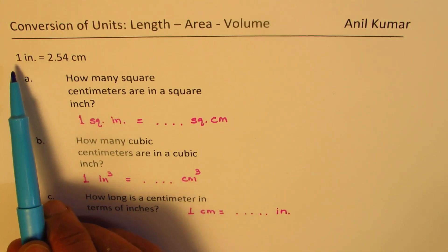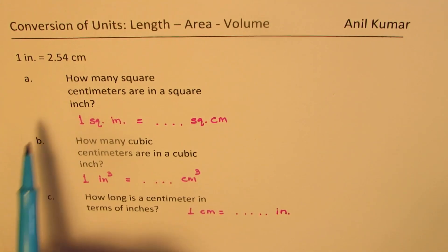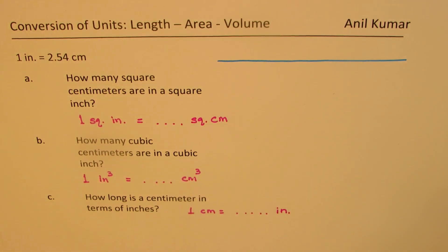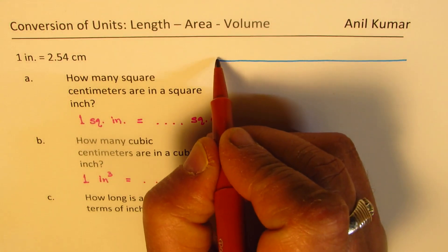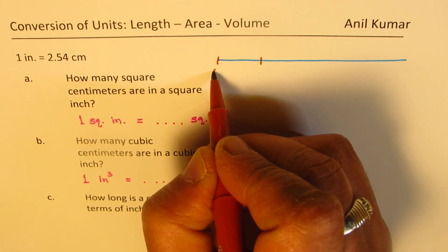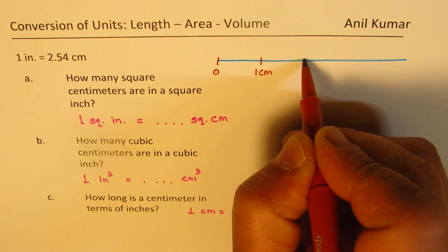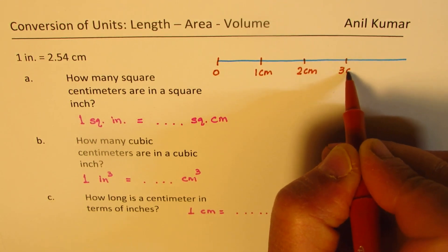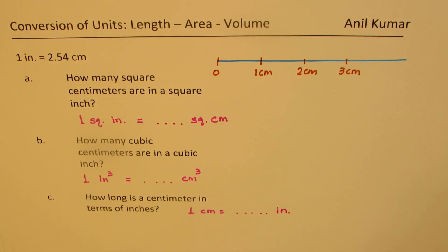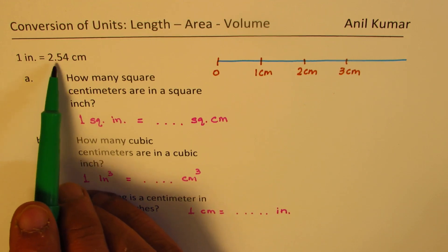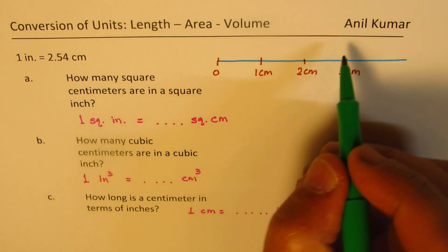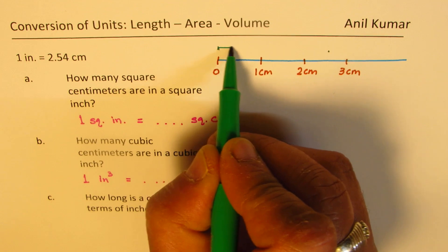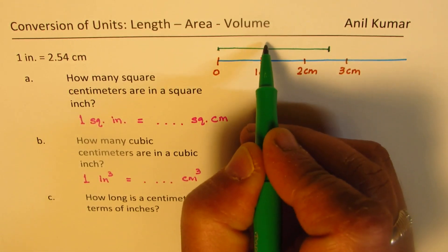Let's understand what is given to us. One inch is 2.54 centimeters. Let's draw a line to represent this — starting from here, this is one centimeter, then two centimeters, then three centimeters. One inch is 2.54 centimeters, which is slightly more than two and a half centimeters. So approximately this length here represents one inch.